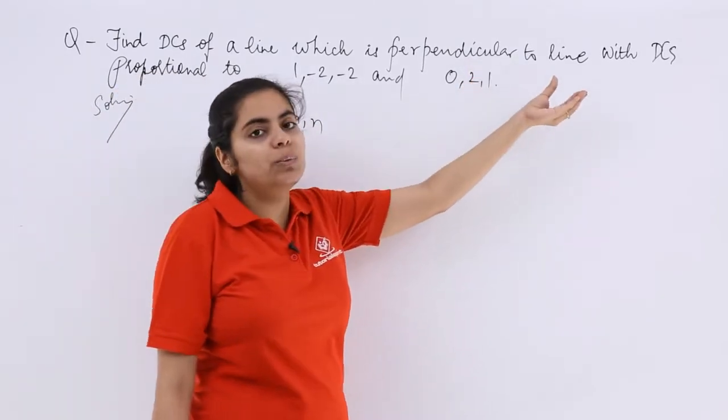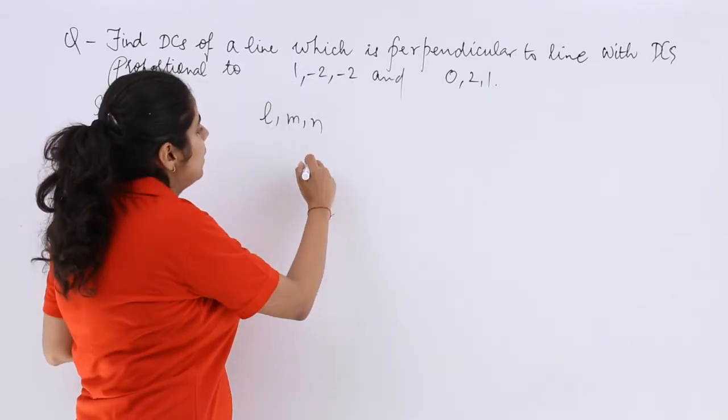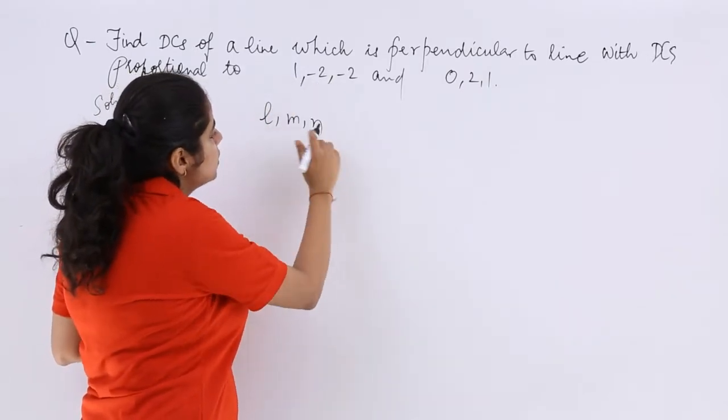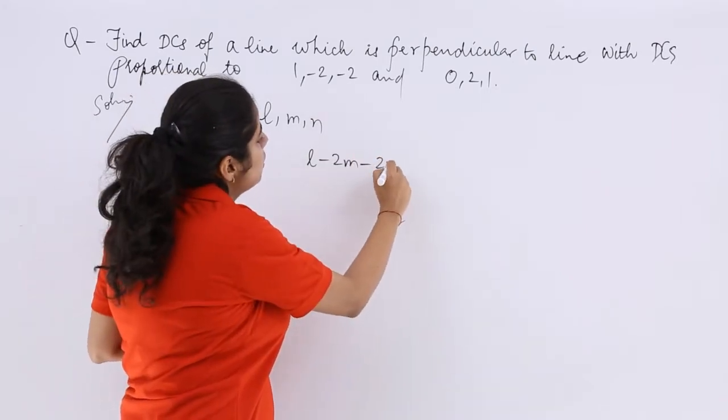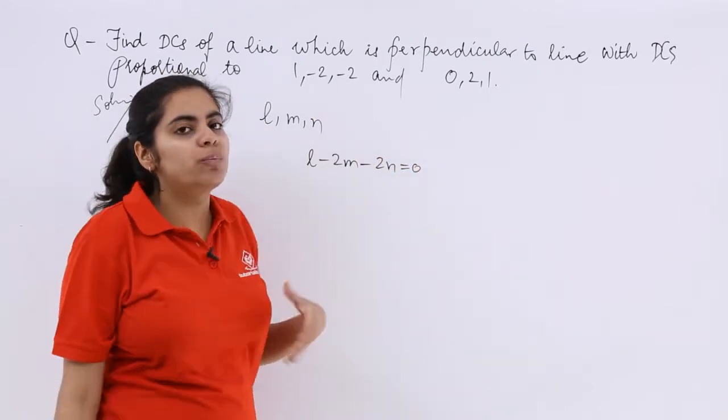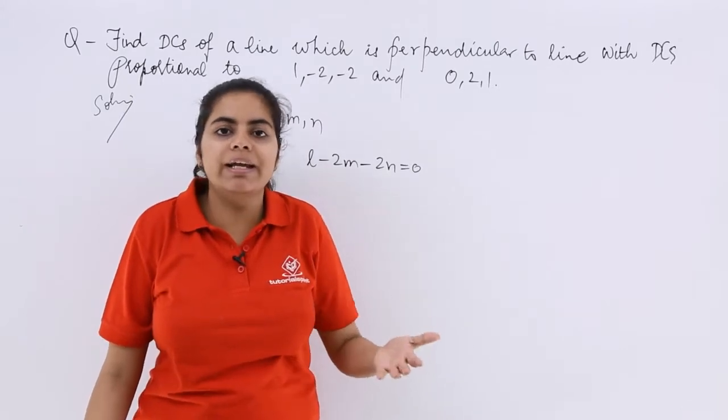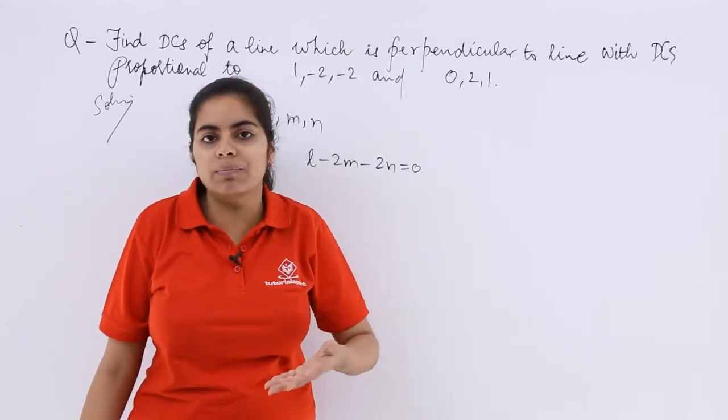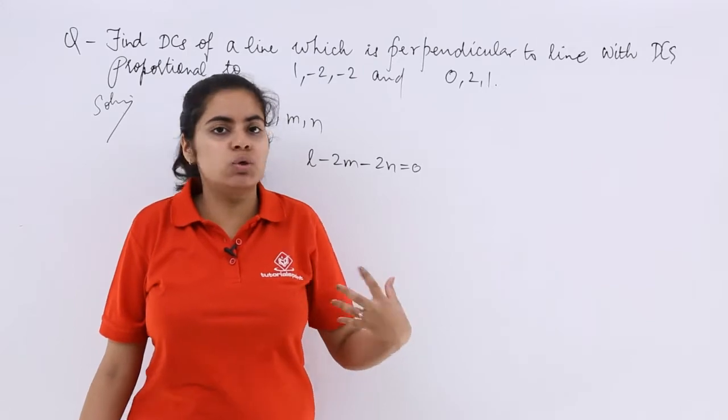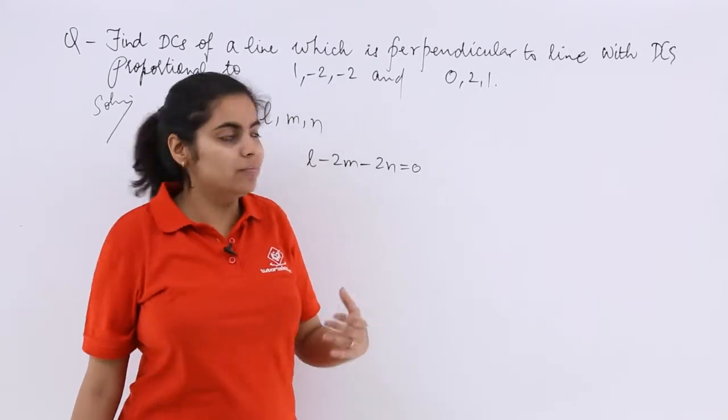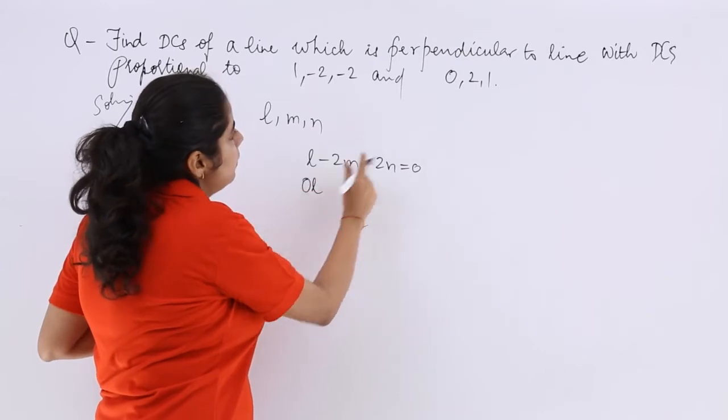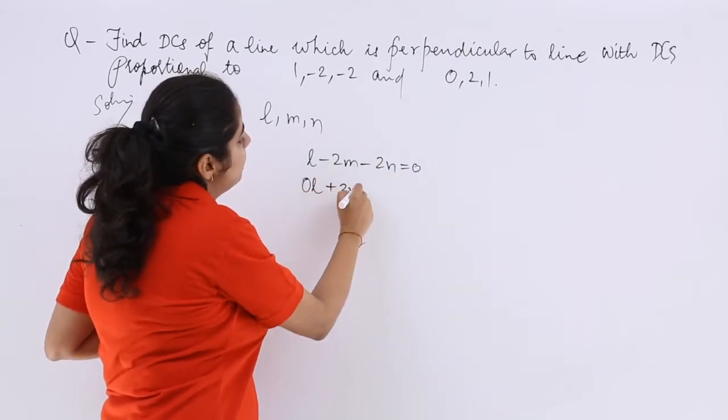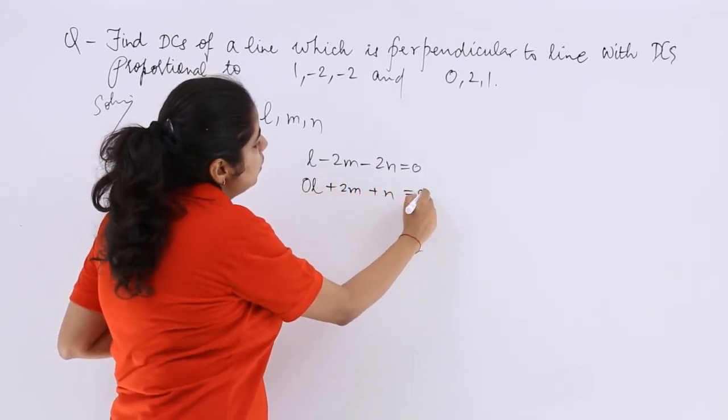Now these direction cosines are basically of a line which is perpendicular to a line. So L multiply by 1 which is L, minus 2 into M, minus 2 into N should be 0 because condition of perpendicularity says A1A2 plus B1B2 plus C1C2, something of that sort. I mean L1L2 plus M1M2 plus N1N2. Now similar to this, 0L plus 2M plus N is 0.